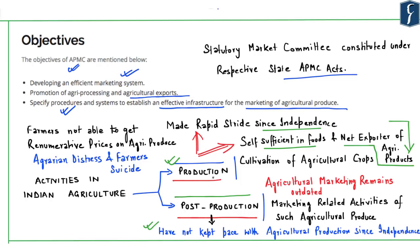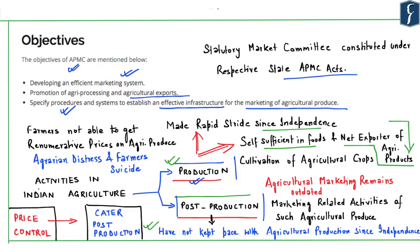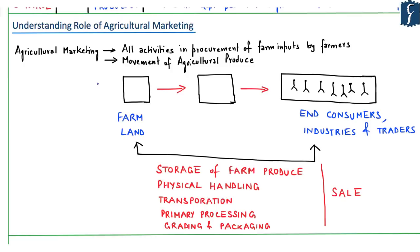The rapid growth of agricultural production calls for a paradigm shift in post-production capabilities. The earlier marketing system was set up to cater to shortfalls in agricultural production and was geared for price controls. However, since the production scenario has changed, agricultural marketing policies should also change accordingly. Agricultural marketing in India has a broader connotation — it includes all activities in the procurement process of farm inputs by farmers, as well as movement of agricultural produce from farmland to end consumers including industries and traders.